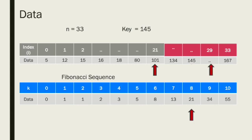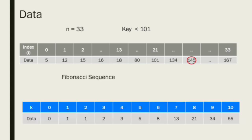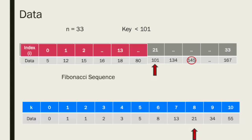If we check position 29 and the key value is less than the element there, we search the left part of the file. Then we move to the appropriate Fibonacci sequence position.